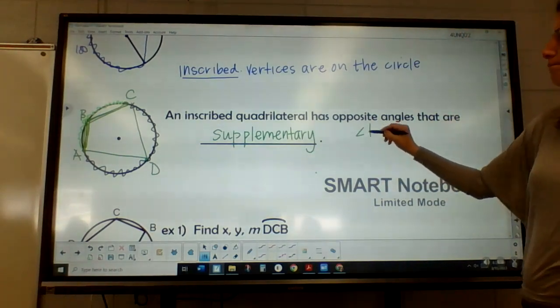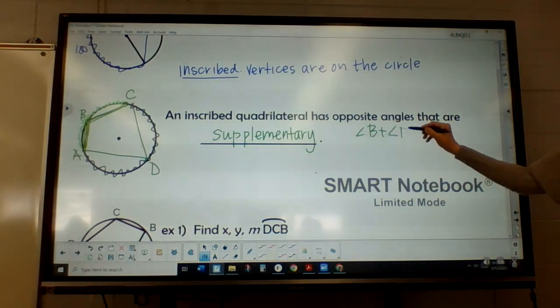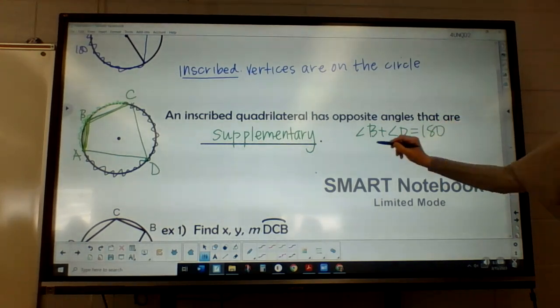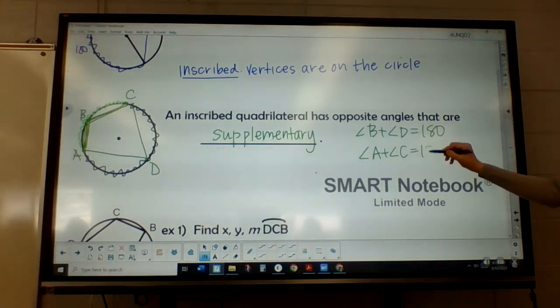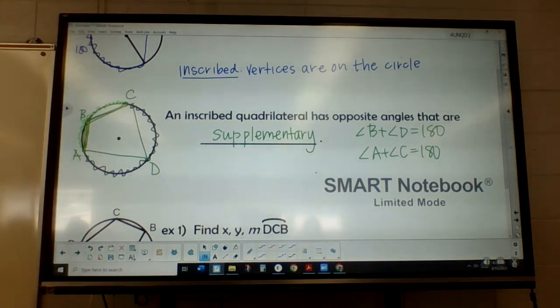So I'm going to say that angle B plus angle D is going to equal 180. Same thing for A and C. And this is if it's an inscribed quadrilateral. That will always work.